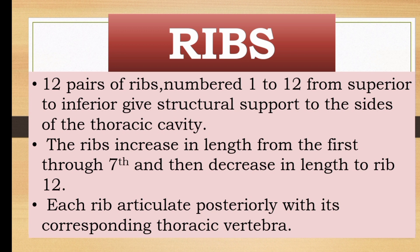The thoracic cavity — the sides have structural support. The ribs increase in length from the first to the 7th and then decrease in length to rib 12.